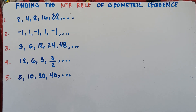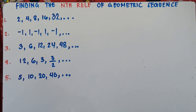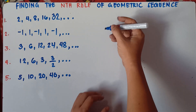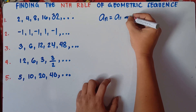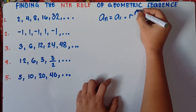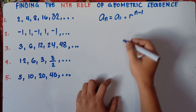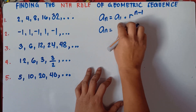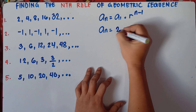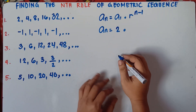Now what if the teacher will ask you to find the equation of this given geometric sequence? What will you do? The thing that you will do is you need to find the equation using the geometric sequence formula. The formula would be a sub n equals the first term times the common ratio raised to the power of n minus 1. So simply copy: a sub n equals the first term — class, the first term is 2 — times the common ratio.